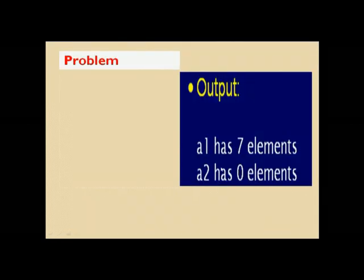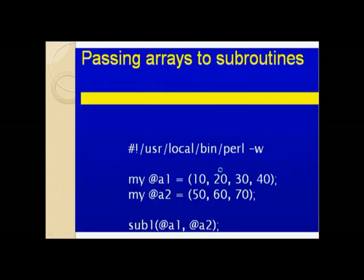But the output is 7 and 0. So after passing arrays to the subroutine, you have lost your original arrays.